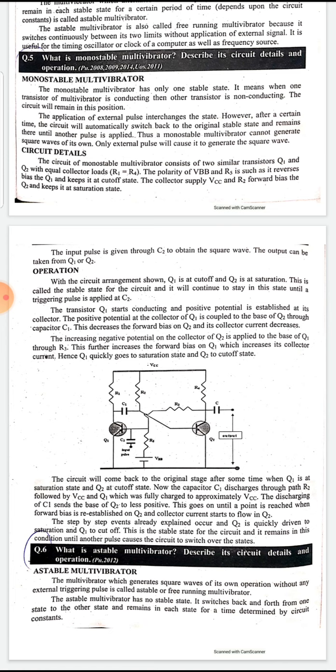When we give the triggering pulse, Q1, which was in the non-conducting state, will start conducting, and Q2, which was conducting, will become non-conducting. This is not a stable state — it lasts only for a specific time. That time depends on RC, where T = R × C, the time constant. After this time period, the circuit returns to its stable state: Q1 non-conducting and Q2 conducting.